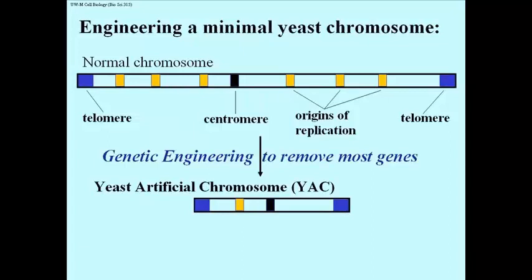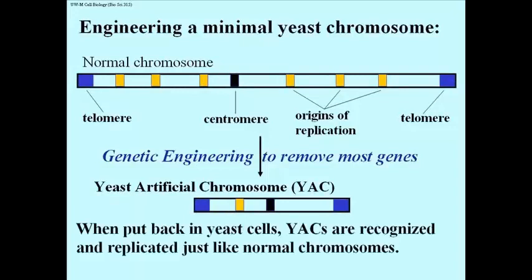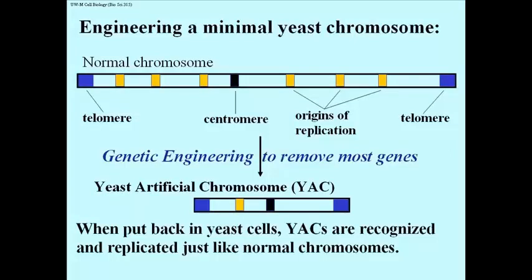In fact, also some of its origins of replication were removed, leaving behind what was termed a yeast artificial chromosome, endearingly called a YAC. It has two telomeres, it has only one origin of replication, and it has a centromere. You can take this chromosome and put it back into yeast cells. The YACs are recognized in that cell and replicated — that is duplicated — and partitioned, just like a normal chromosome.